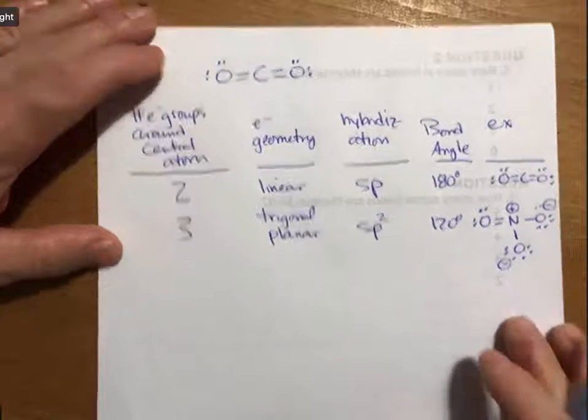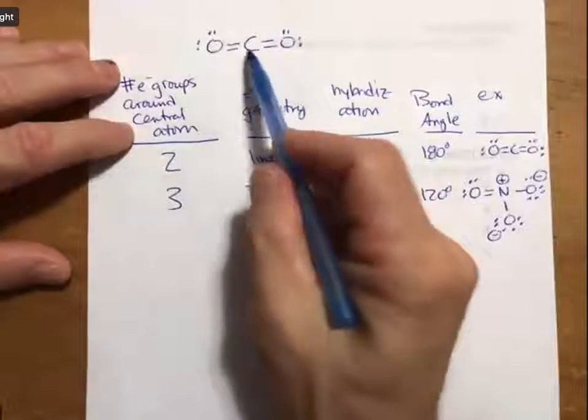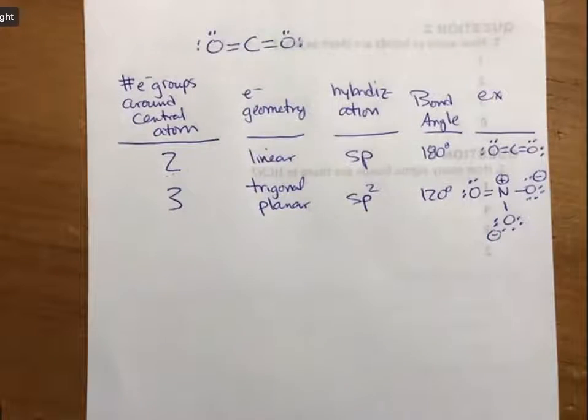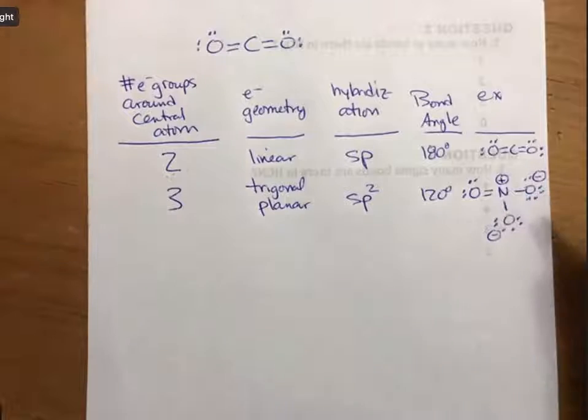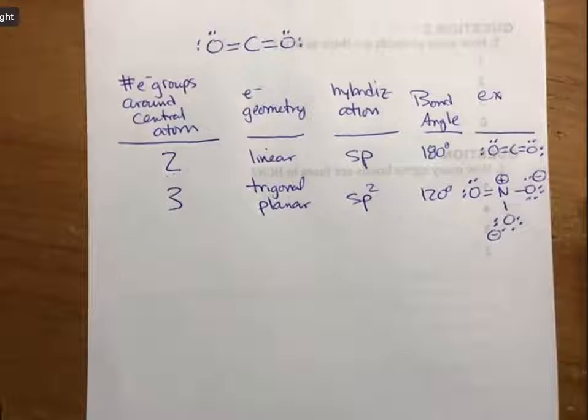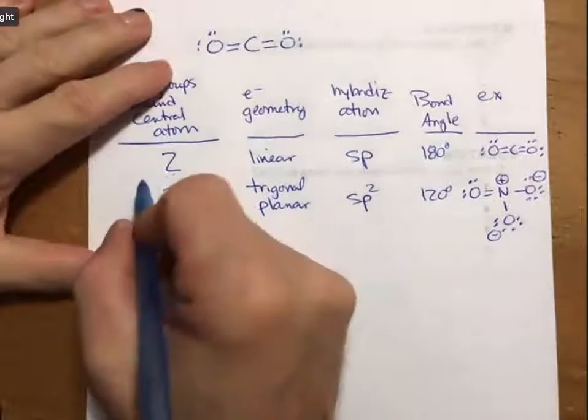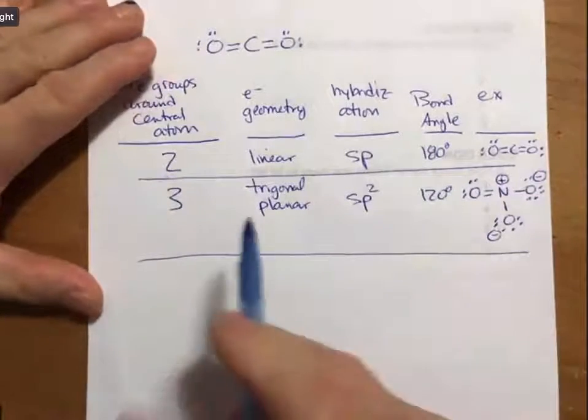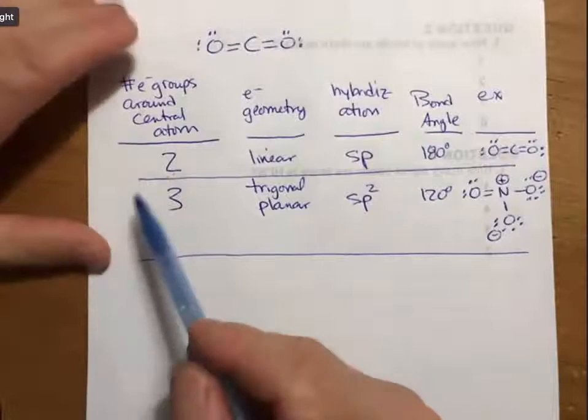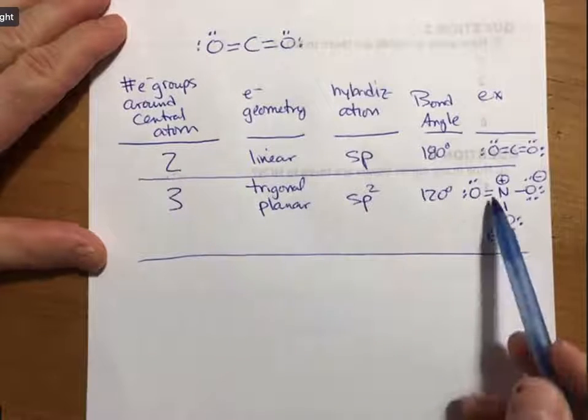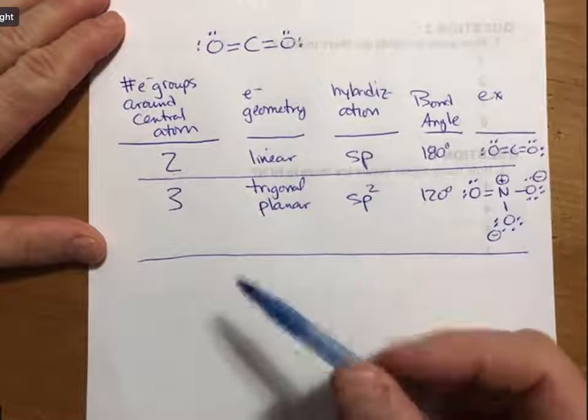From the lecture outline, an electron group is some form of electrons grouped together or not. A single bond is a group, a double bond is a group, a pair of non-bonding electrons is a group, and a triple bond is one group. The best thing I can tell you is memorize these combinations because you're going to use them a lot.